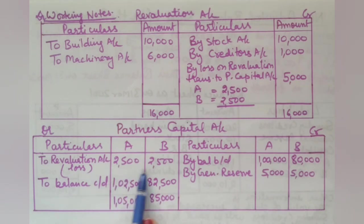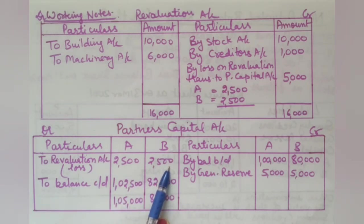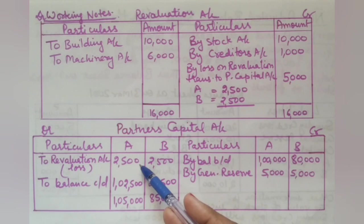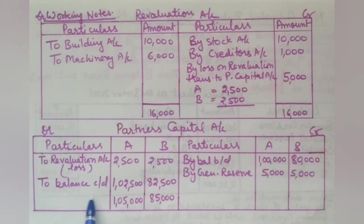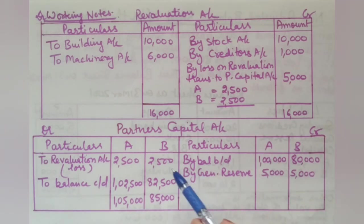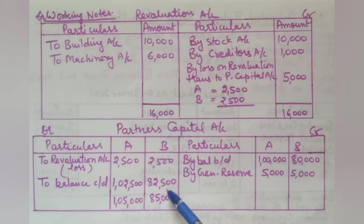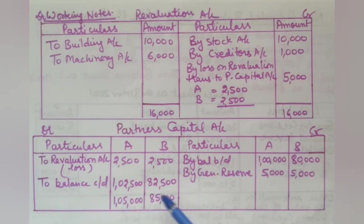The revaluation loss is debited to partners' capital accounts — 2,500 each. After totaling both sides of the capital account, A's closing capital is 1,02,500 rupees and B's closing capital is 82,500 rupees. These two closing capital figures will be shown in the new adjusted balance sheet.